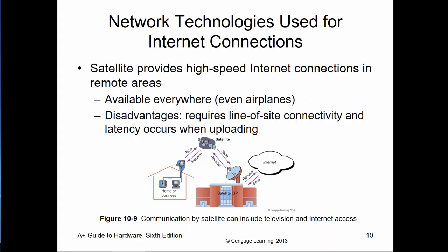We also have things like satellites, where we communicate with a satellite through a dish at our property. That signal goes to outer space and bounces back to a satellite ISP, which then transmits it to the internet. Here we end up with slower connectivity and increased latency, but the benefit is it's available everywhere, including on an airplane.